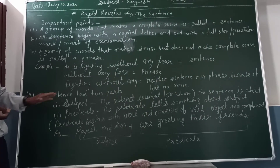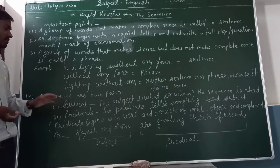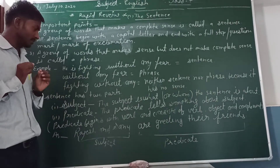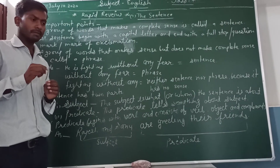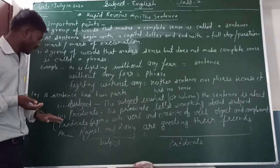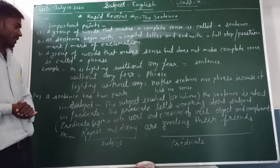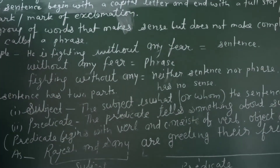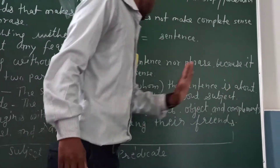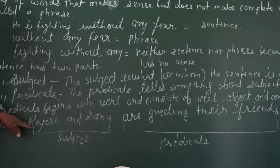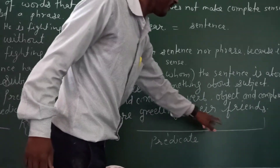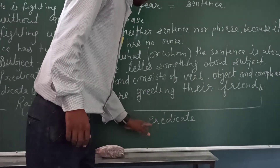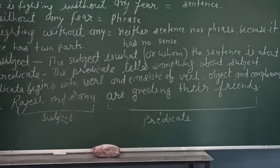Next, a sentence has two parts. First, the subject — the subject is what the sentence is about, it tells about what something is done. Second, the predicate — the predicate is something about the subject; it consists of a verb, object, and complement. For example: 'Lioness and Siren are greeting their friends' — 'Lioness and Siren' is the subject, and 'are greeting their friends' is the predicate.